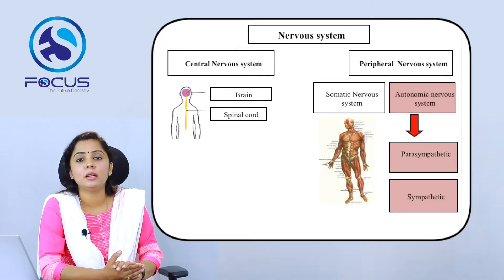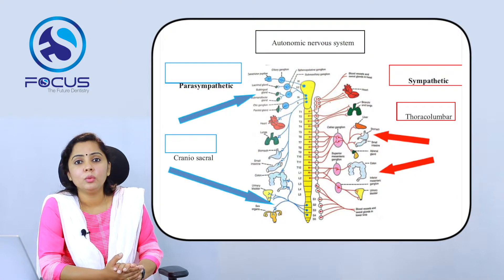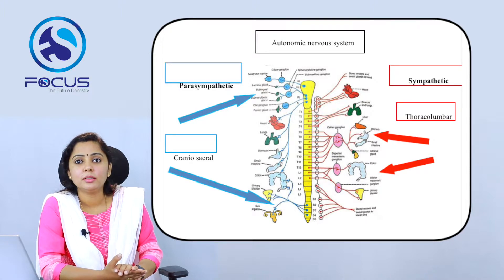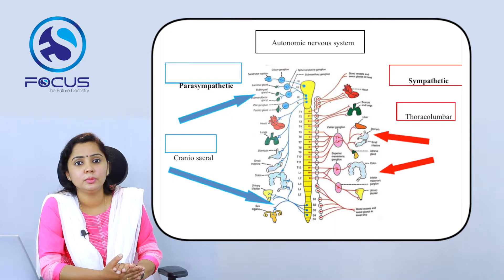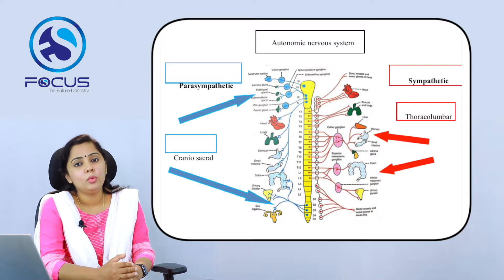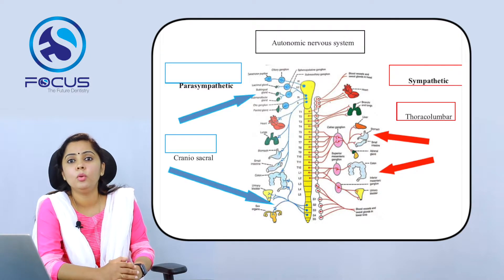The autonomic nervous system has two divisions: the sympathetic and the parasympathetic system. The parasympathetic system is otherwise called the craniosacral outflow, which includes the cranial nerves 2, 7, 9, and 10, and the nerves arising from the sacral segment of the spinal cord. The sympathetic nervous system is called thoracolumbar, which includes nerves from the first 12 thoracic segments and the first two lumbar segments.